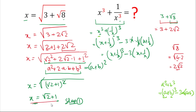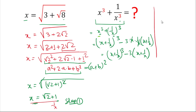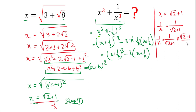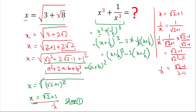Now we calculate the value of 1 over x. Since x equals square root 2 plus 1, the value of 1 over x is 1 divided by square root 2 plus 1. To rationalize, we multiply numerator and denominator by square root 2 minus 1. The denominator becomes a plus b times a minus b form, which equals a squared minus b squared: square root 2 squared minus 1 squared equals 2 minus 1 equals 1. So the value of 1 over x is square root 2 minus 1.